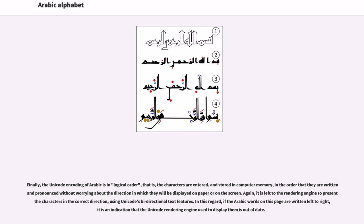Finally, the Unicode encoding of Arabic is in logical order — that is, the characters are entered and stored in computer memory in the order that they are written and pronounced, without worrying about the direction in which they will be displayed on paper or screen. It is left to the rendering engine to present characters in the correct direction using Unicode's bi-directional text features. If the Arabic words on this page are written left to right, it is an indication that the Unicode rendering engine used to display them is out of date.